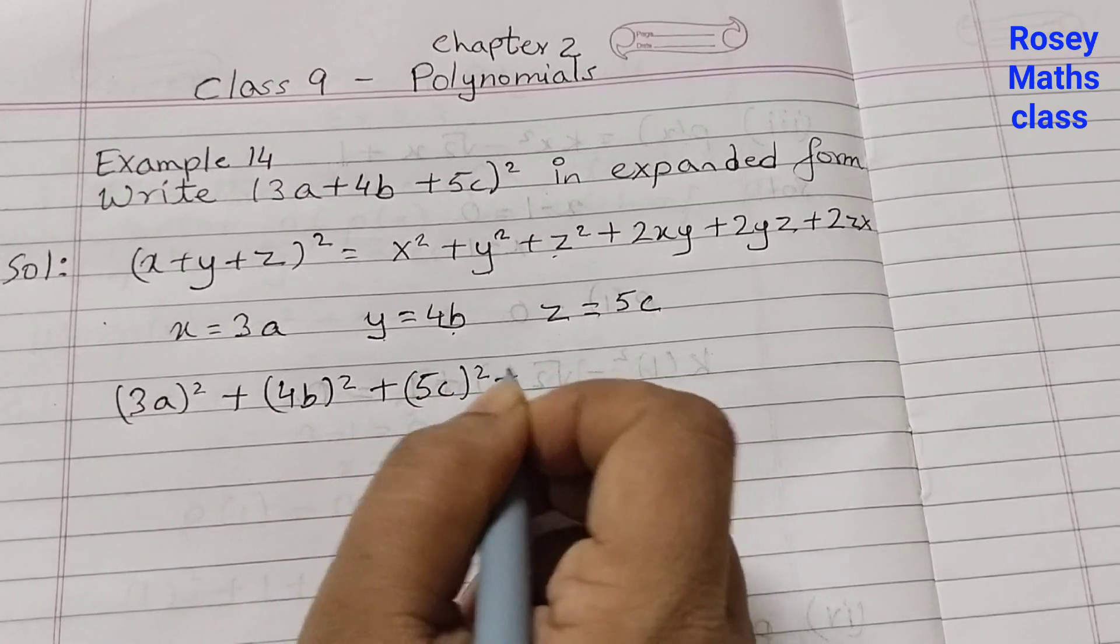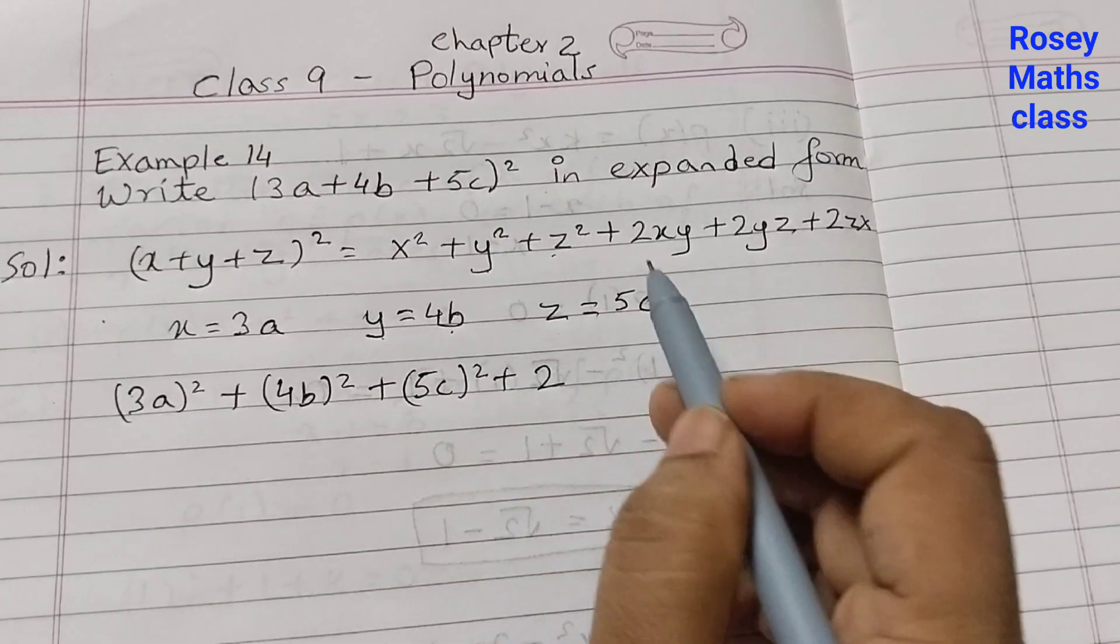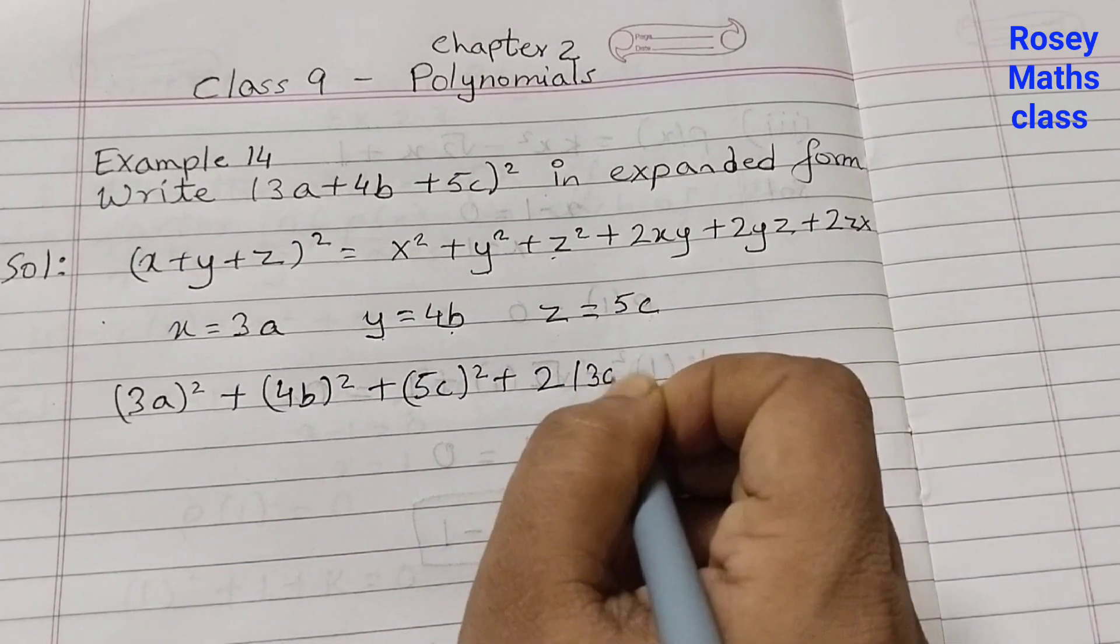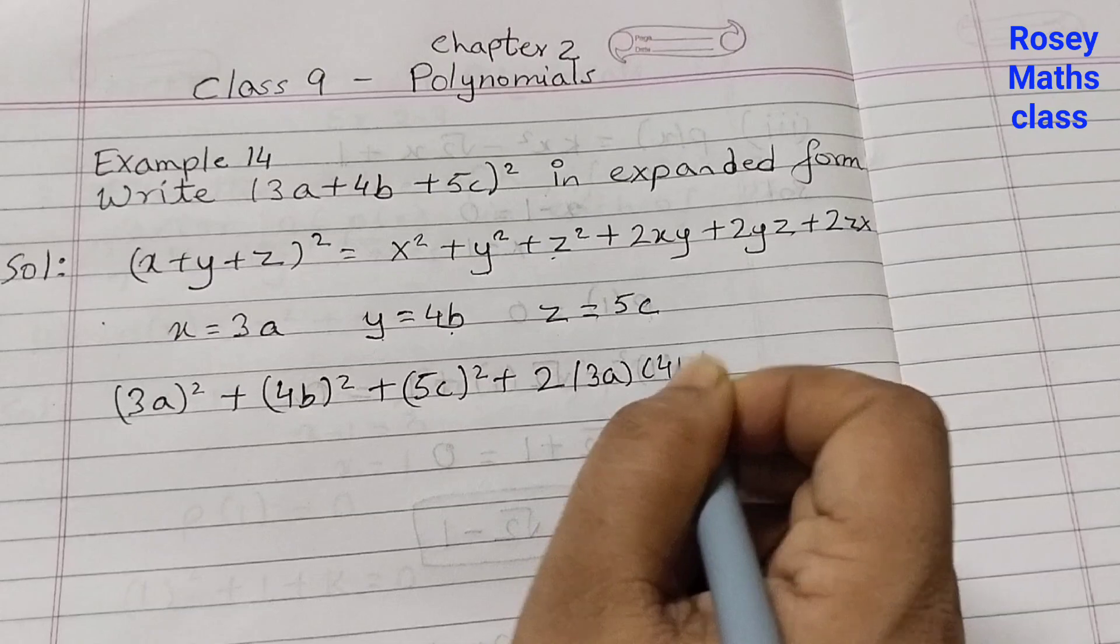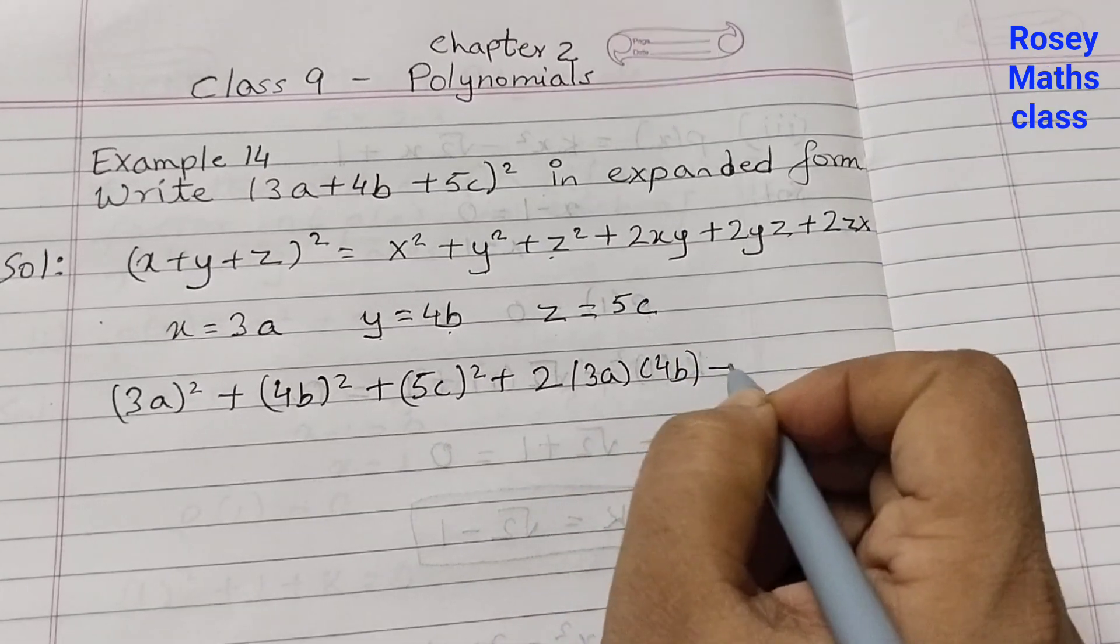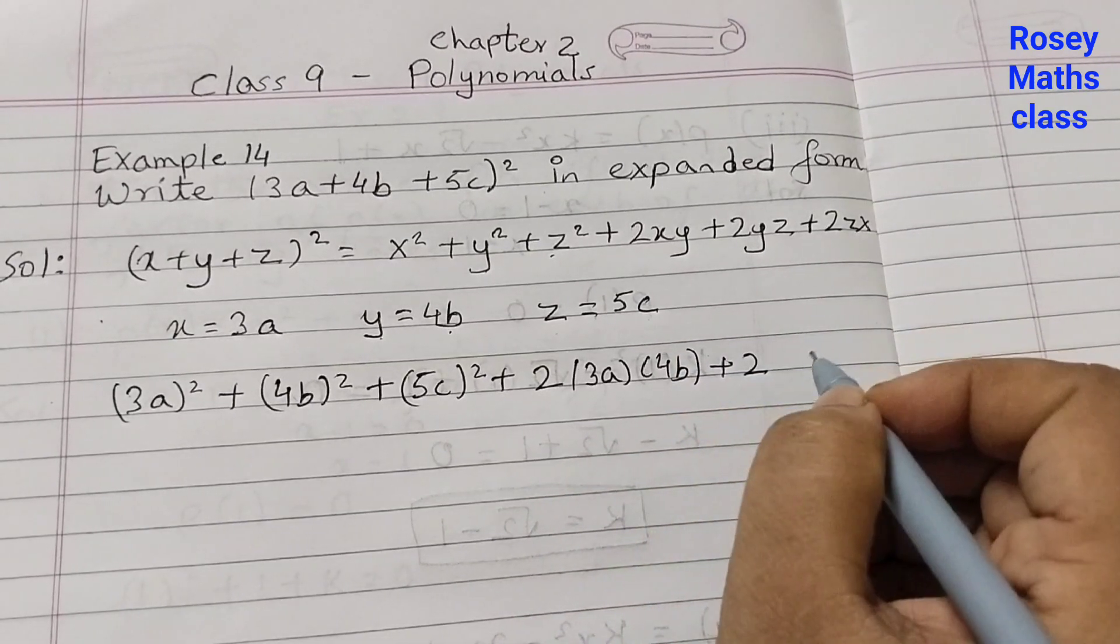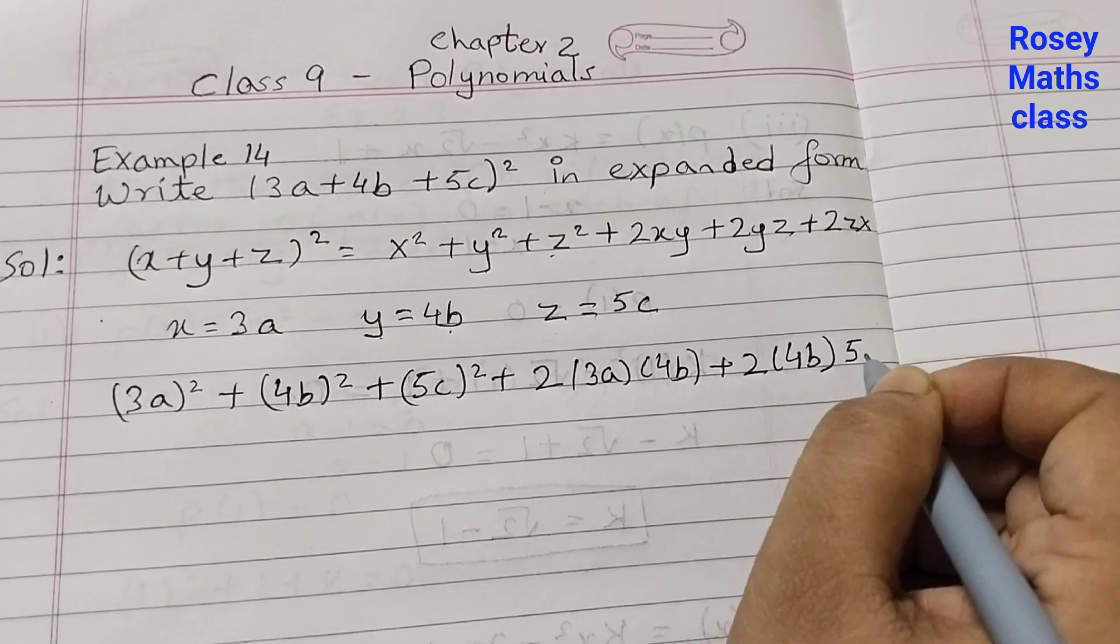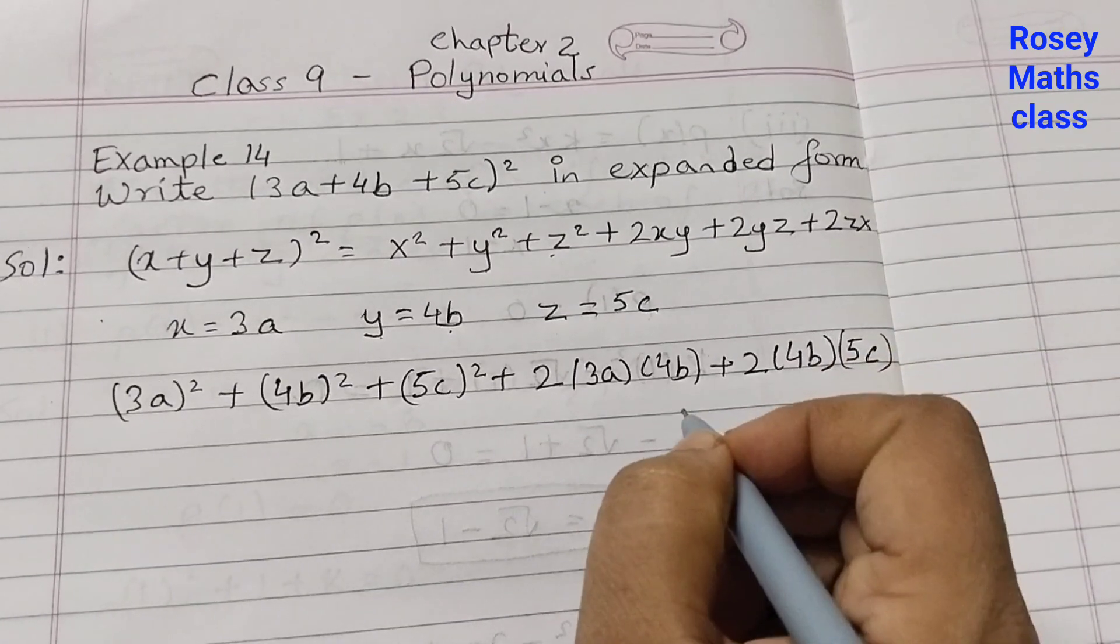Plus 2xy: 3a into 4b, plus 2yz: 4b into 5c, plus 2zx: 5c into 3a.